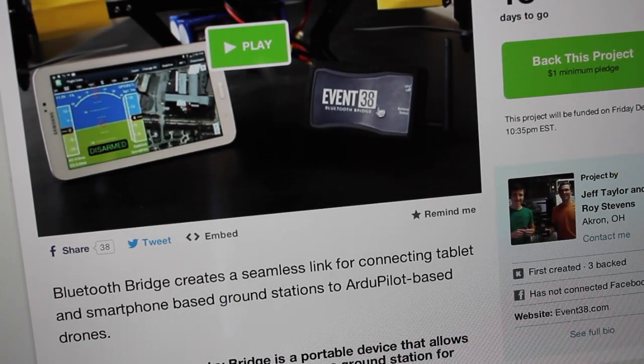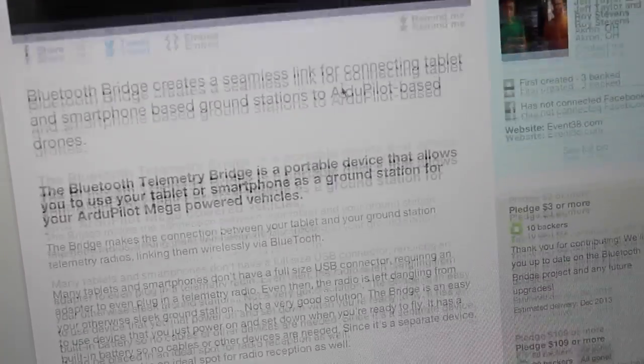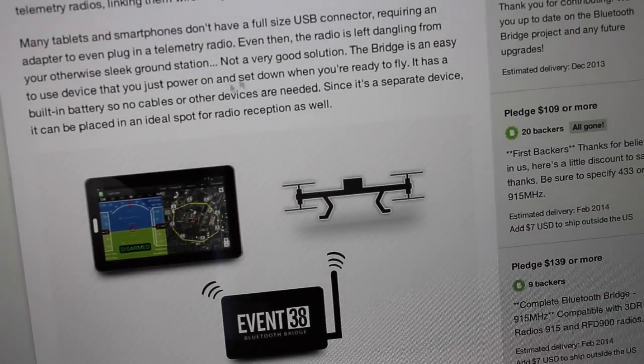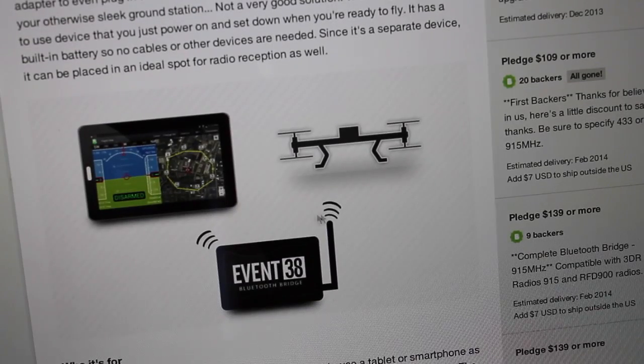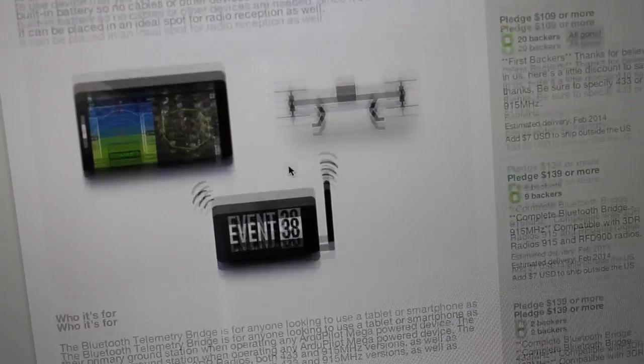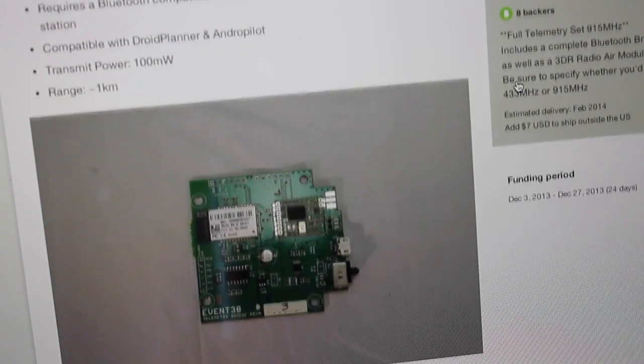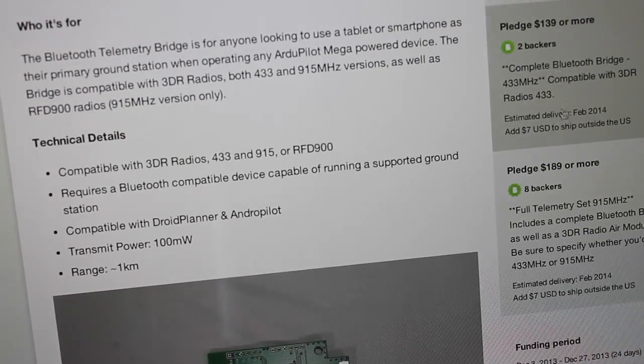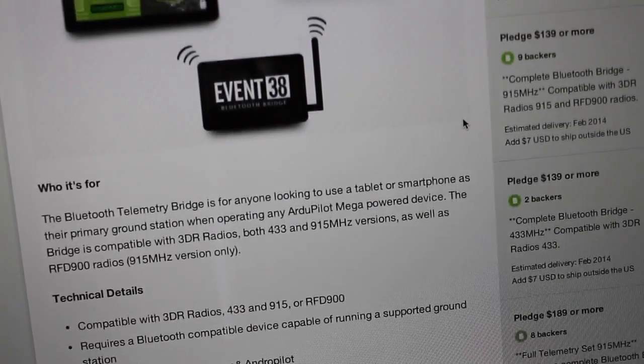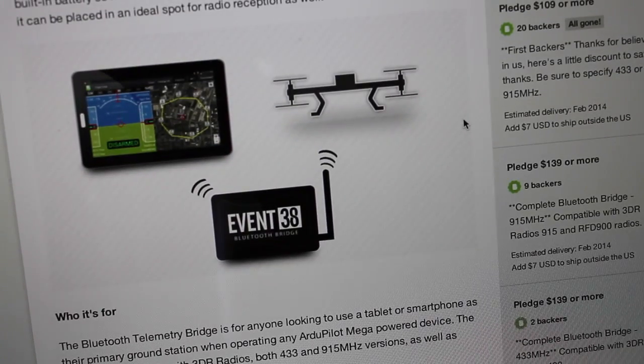And it's all-encompassing, so it has not only your Bluetooth module, but your modules to do telemetry with your APM. So a very simplified setup. Unfortunately, it's not going to be available until I believe February, and it looks like it's going to be around $140.